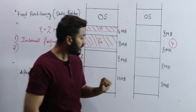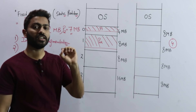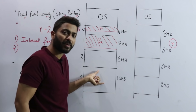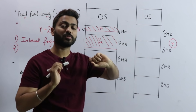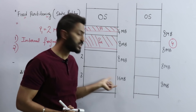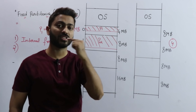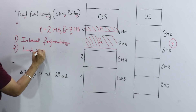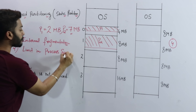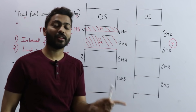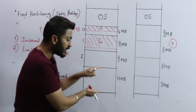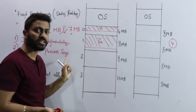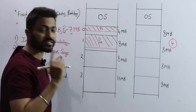Another problem: suppose a process has size 32MB. Can we accommodate it? No — because the maximum partition size is 16MB, which was decided when configuring the system. If a process larger than the maximum partition size arrives, we cannot accommodate it anywhere. This is the second disadvantage: there is a limitation on process size.